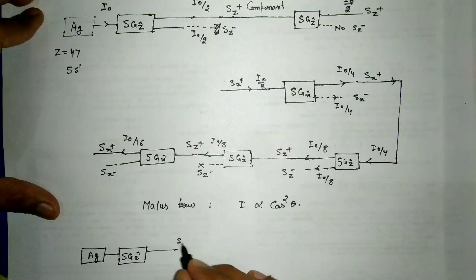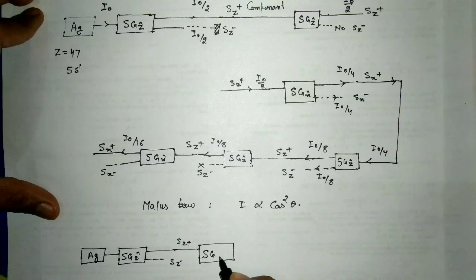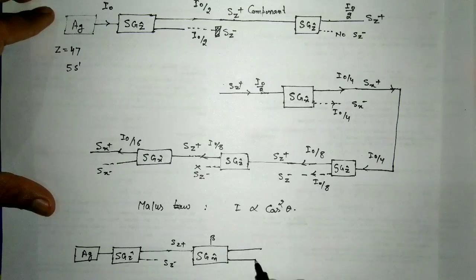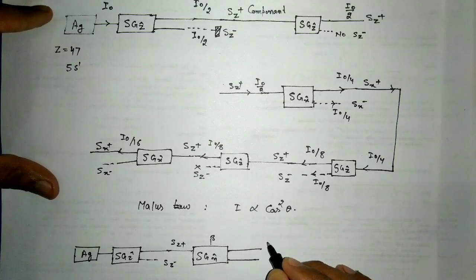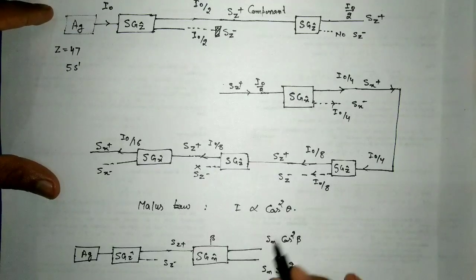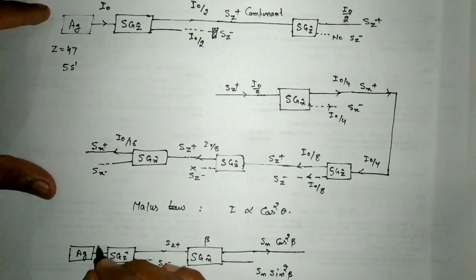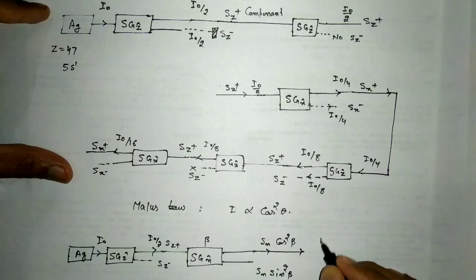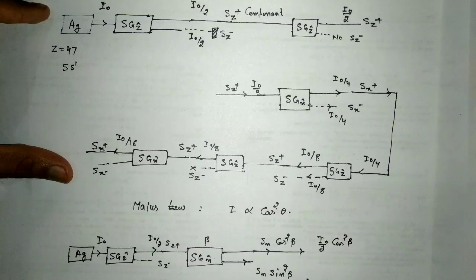If we consider silver atoms from the oven passed through an SG-Z arrangement, we get two components Sz+ and Sz−. If this Sz+ is passed through an SG arrangement along an arbitrary direction N-cap that makes an angle β with the Z direction, then we get two components with intensities I₀/2 · cos²β and I₀/2 · sin²β.